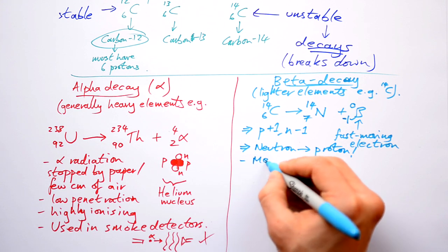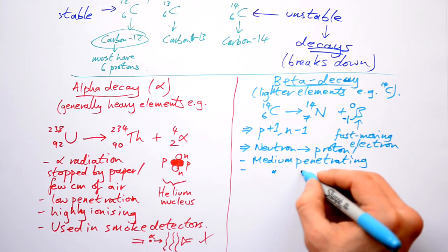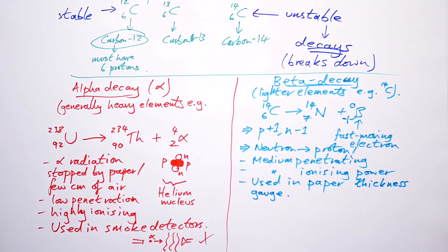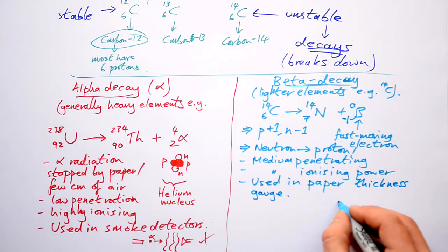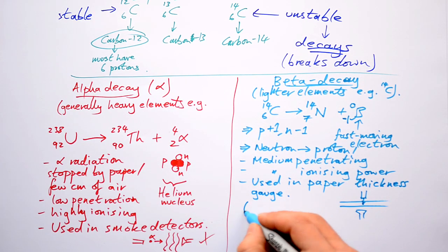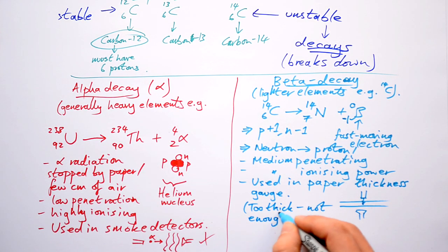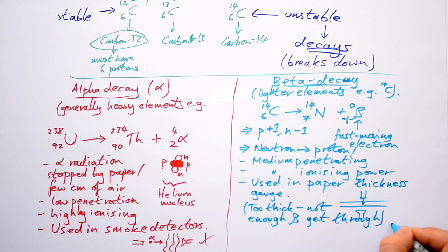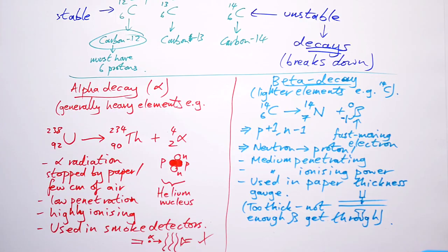Beta decay is medium penetrating and it's medium ionizing as well. A good use for it is in a paper mill, for instance. We have our paper going through like that. We have our source, and it's firing beta particles, these fast-moving electrons, through, and then we have this detector on the other side. If it's too thick, not enough beta particles get through. And the system knows that it has to make it thinner. Too many beta particles get through, that means that the paper is too thin, so it has to change the thickness to make it a little bit thicker.